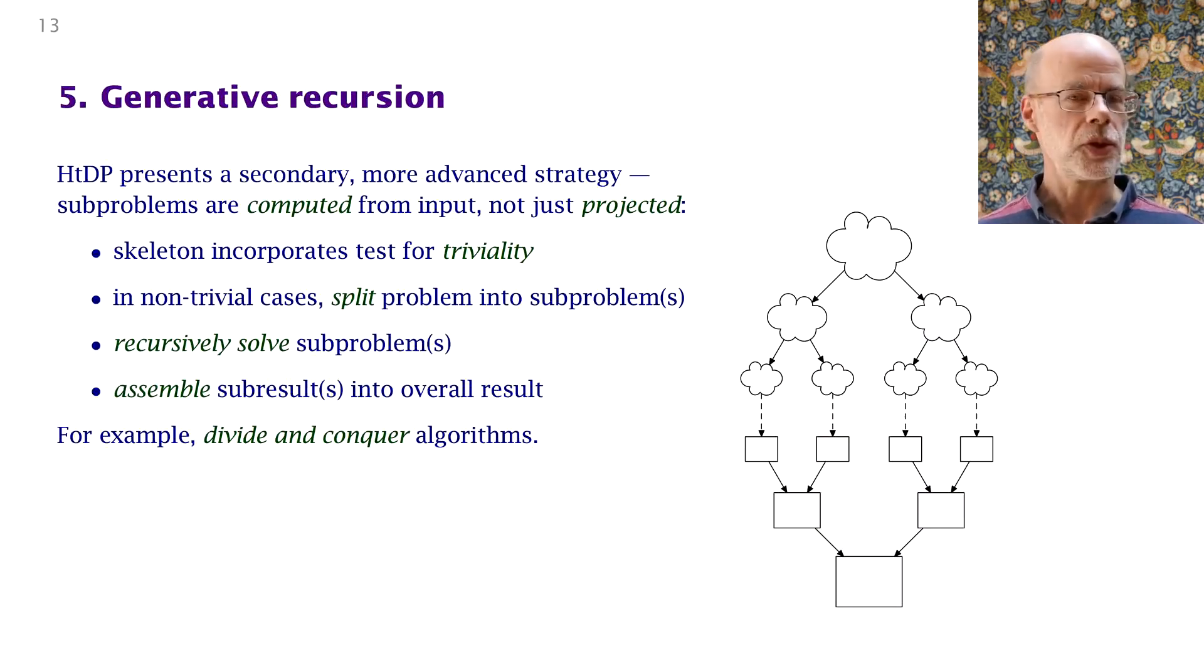Now, How to Design Programs doesn't stop with structural recursion. It goes on to some more elaborate and sophisticated design recipes, and one of those is generative recursion. So this is a generalization of structural recursion. You make recursive calls on substructures, but the substructures are not immediately present in the problem. They're not obtained by projection from the input data, but by some more involved computation. You have to do some work to come up with the sub-problems. So the design recipe for generative recursion says you've got a problem, you have a test for triviality. If it's trivial, you solve it by some other more basic means. Otherwise, you split it into sub-problems, recursively solve those sub-problems, and then combine those sub-results into the overall result.